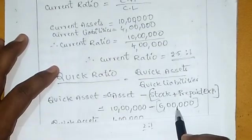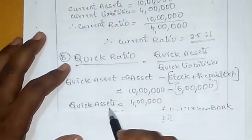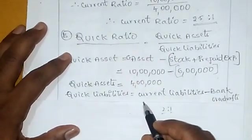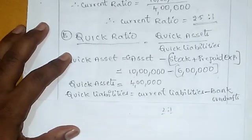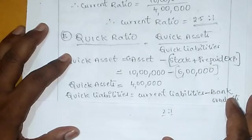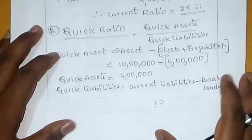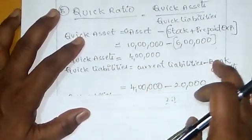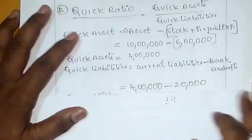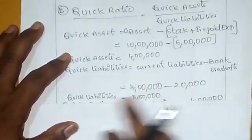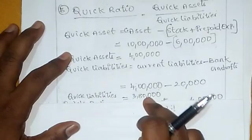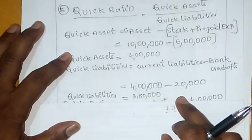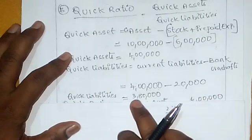10 lakhs minus 6 lakhs gives quick assets = 4 lakhs. Next, calculate quick liabilities. Quick liabilities = current liabilities minus bank overdraft. 4 lakhs minus 20,000 = quick liabilities is equal to 3 lakhs 80,000.